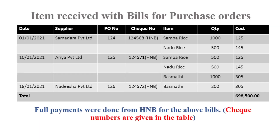This is the item received with bills for purchase orders. If you have a purchase order, you will need a supplier. If you want to add items in the table, you can add the date, the supplier, the purchase order, the check number, the items, the quantity, and the cost.